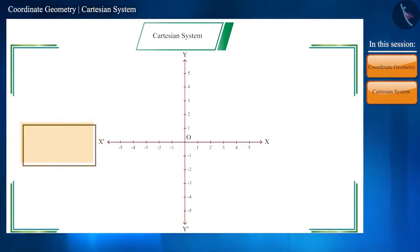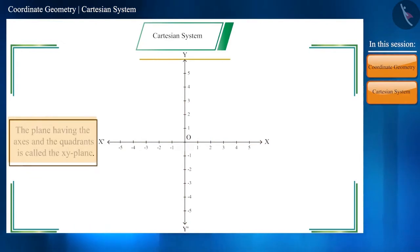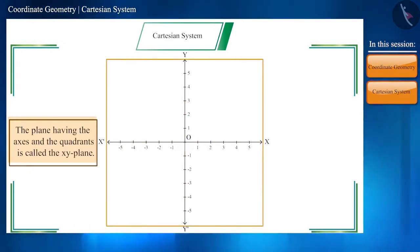That is why these axes are called coordinate axes. And the plane in which these axes and quadrants are is called the XY plane.